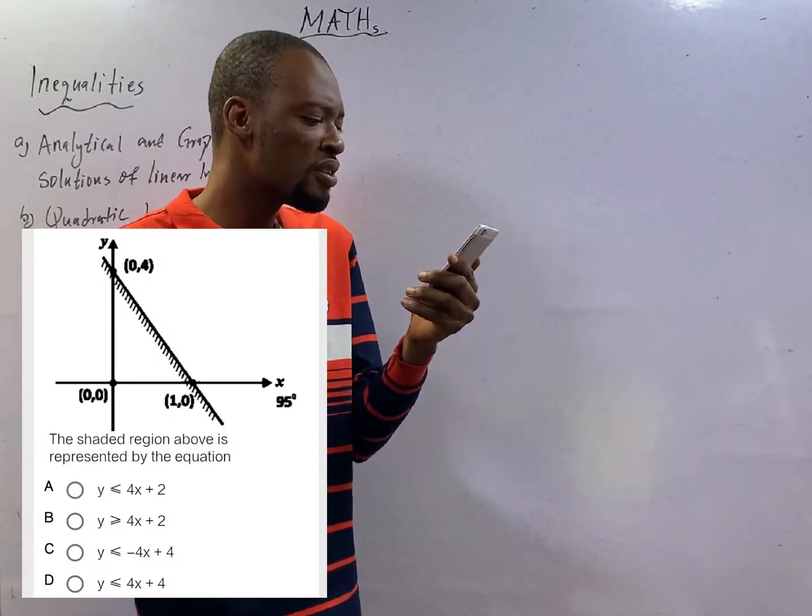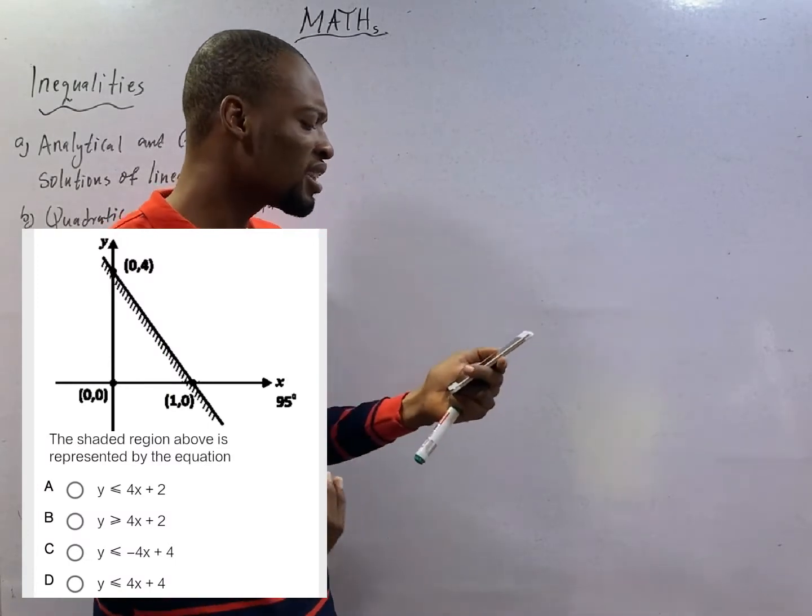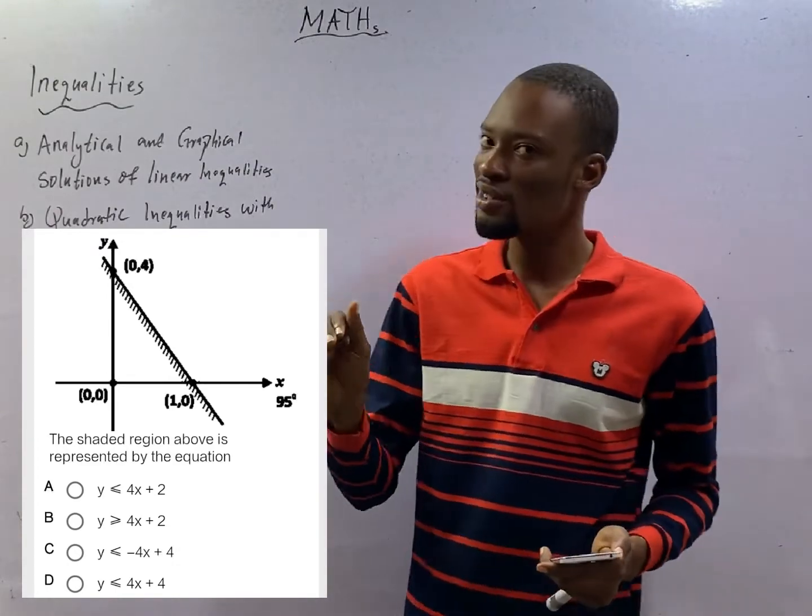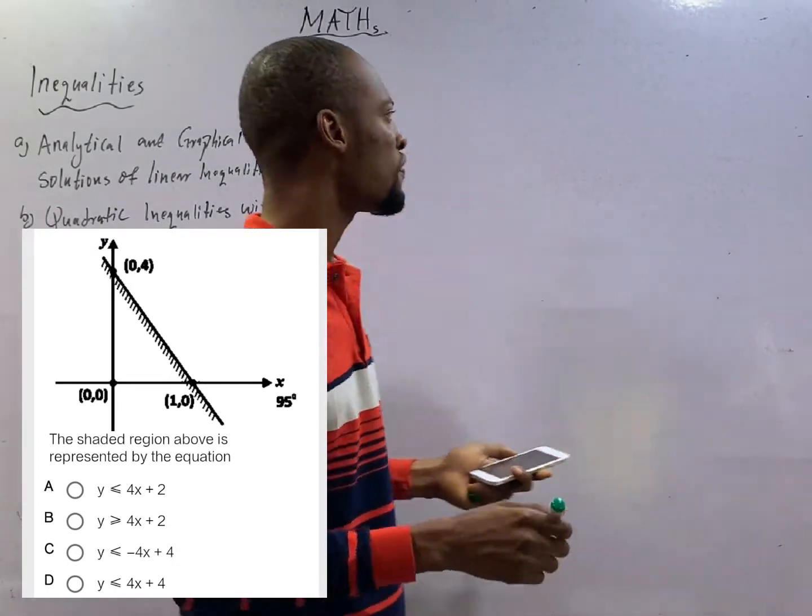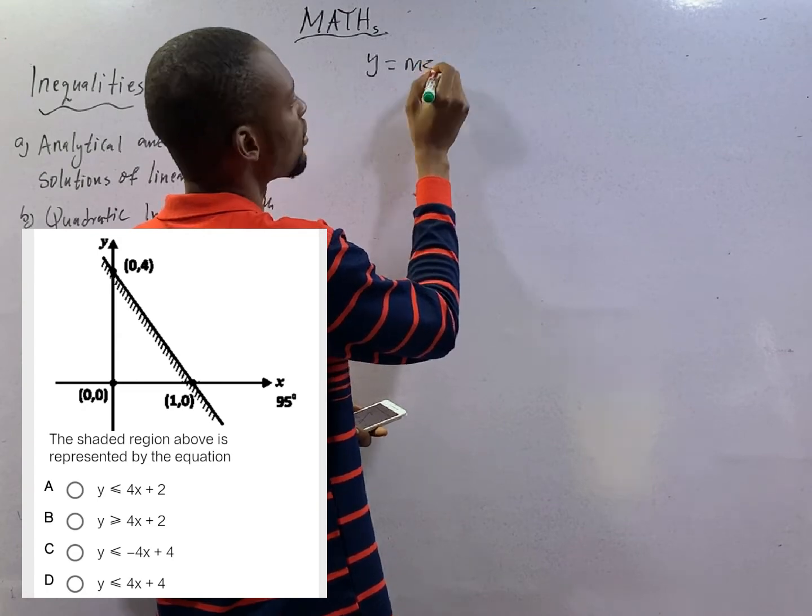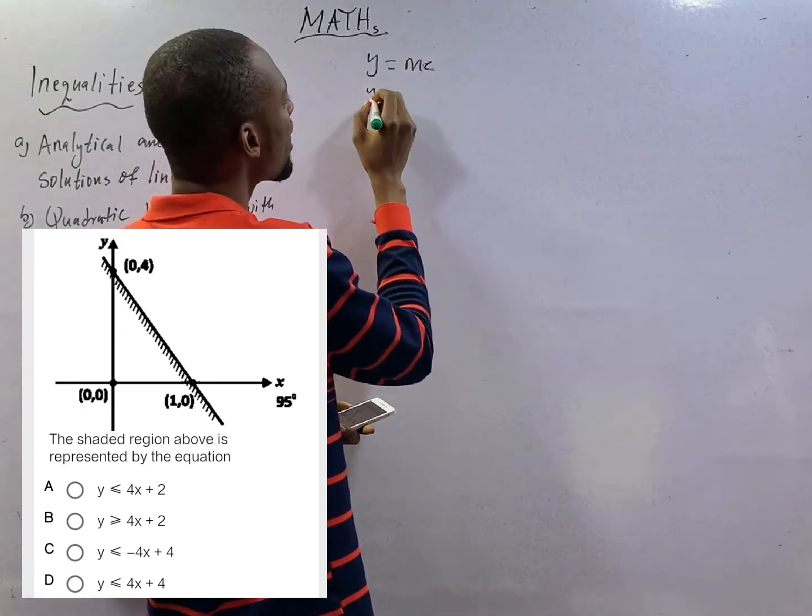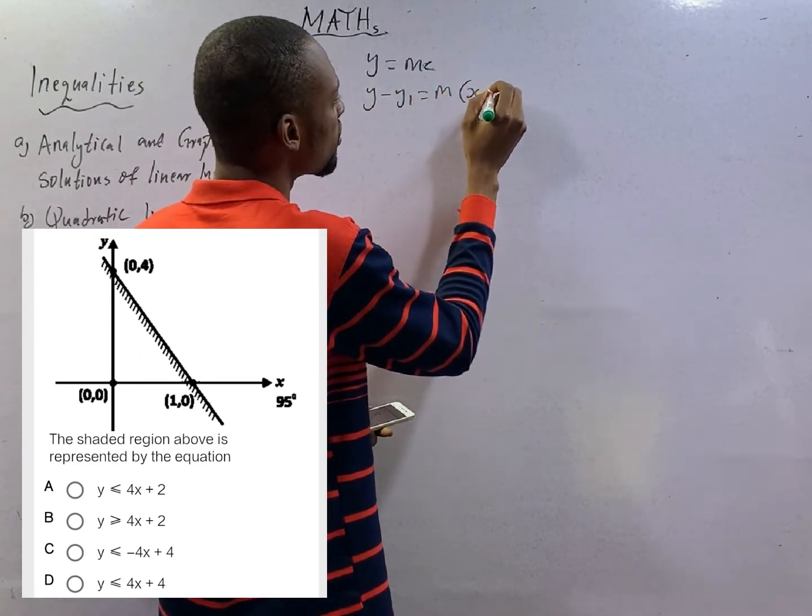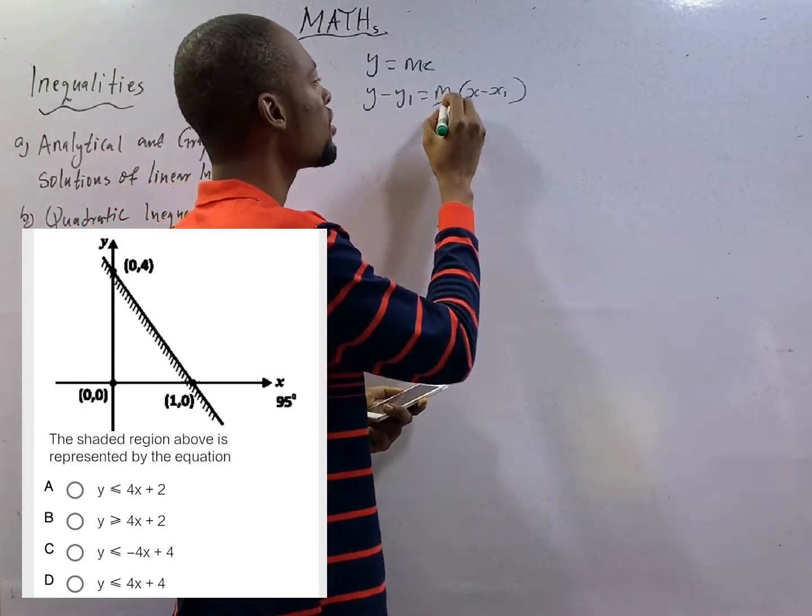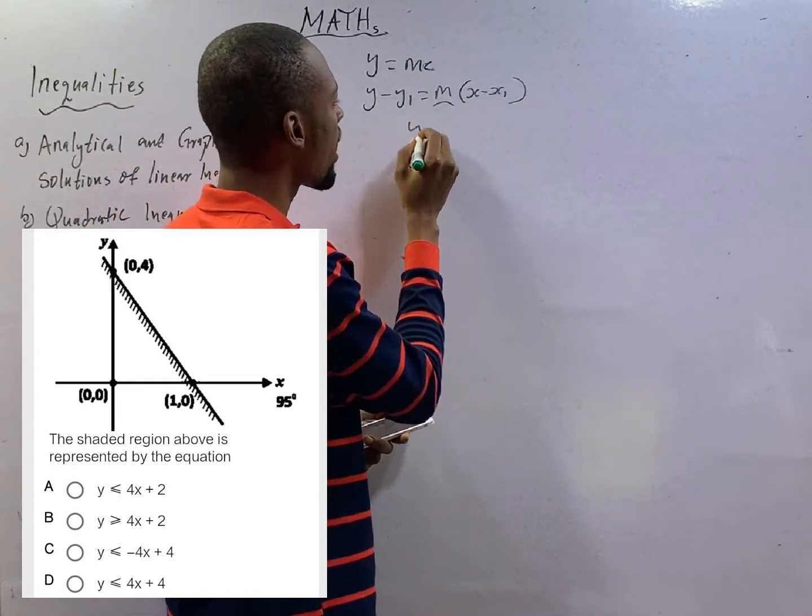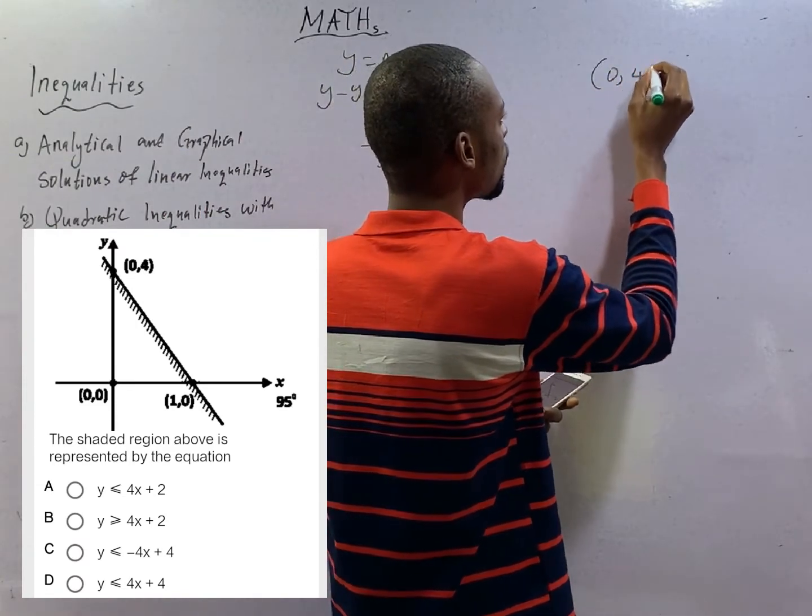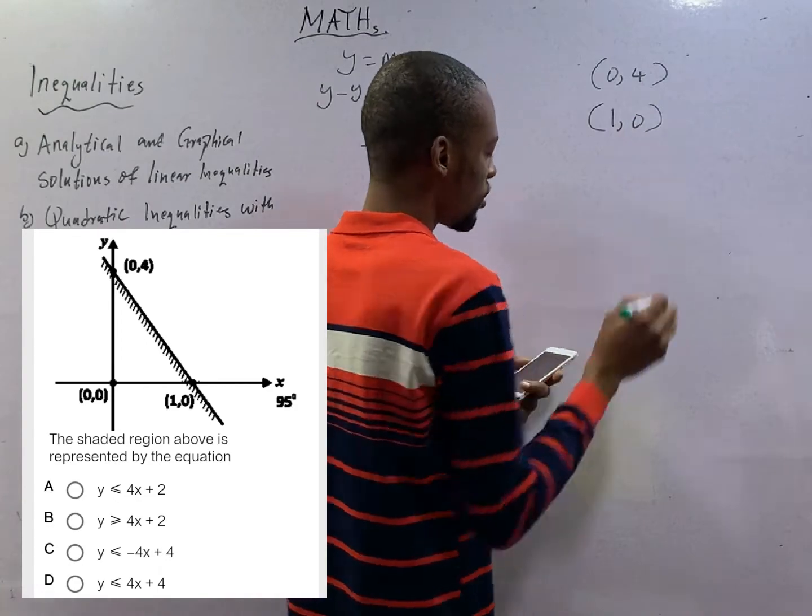The shaded region above is represented by the equation. You are given an inequality and you are asked to look for an equation. Under coordinate geometry, we shall look at equations of line. You will see that to find an equation of line or a straight line, you have something like y = mx or y - y1 = m(x - x1). This is how to look for equation of straight line. What is m? m is the gradient and gradient is (y2 - y1) / (x2 - x1). The first one is (0, 4) and the second one is (1, 0). This is what it implies.